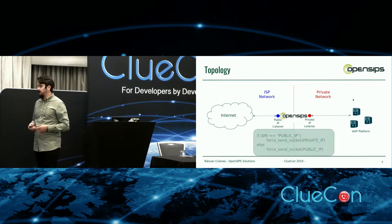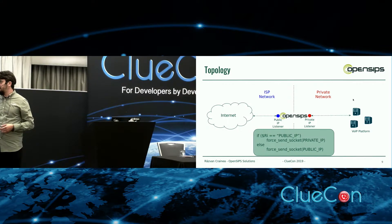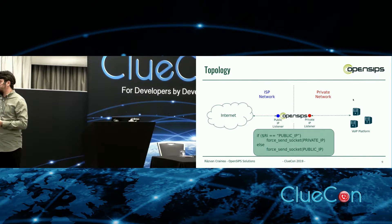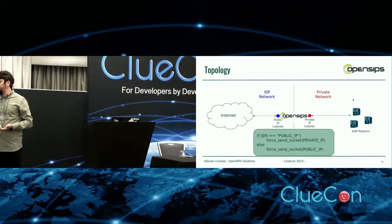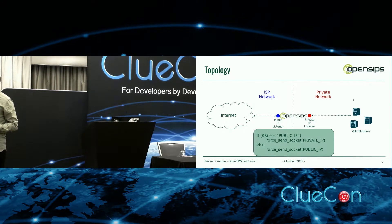This is a common setup where you have OpenSips in the middle. It has one public IP listener that talks to the internet through the ISP network, and one private listener where you have your FreeSwitch swarm and other resources. In order to have OpenSips bridge these two networks, all you have to say is: if the received interface was the public IP, force the socket to the private side.